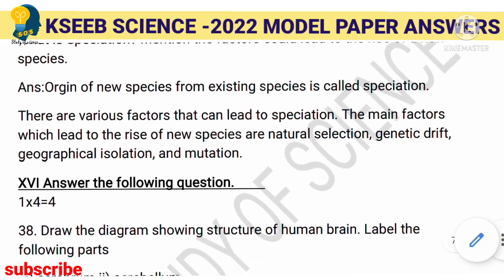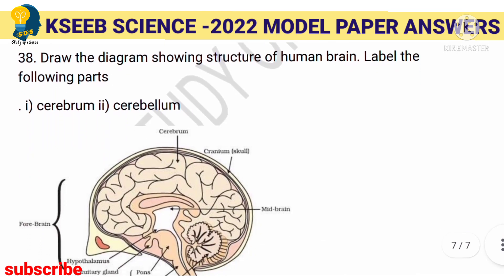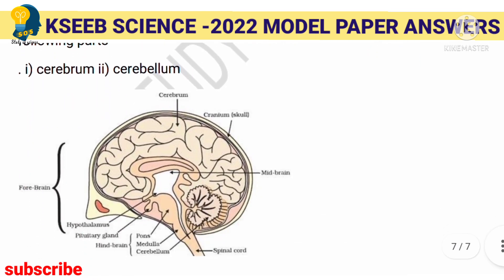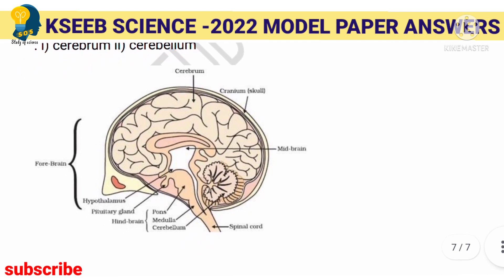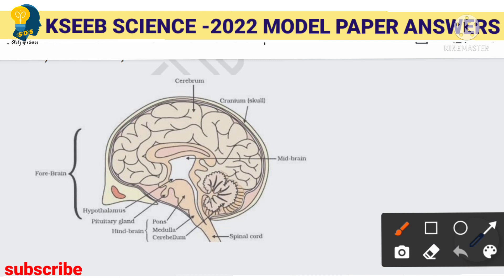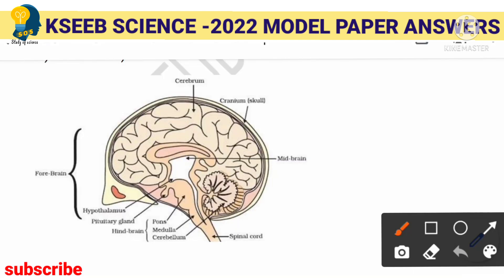The four-mark question asks you to draw the diagram of the human brain and label the cerebrum and cerebellum. You will get two marks for the diagram and two marks for labeling — four marks total.